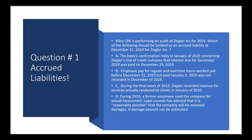Letter C: during the final week of 2019, Ziegler recorded revenue for services actually rendered to the client in January of 2020. That should not have been booked as revenue in December — but that's not an accrued liability. So be careful what the question is asking for. Letter C requires an adjustment to remove that revenue, since it shouldn't have been booked yet. But the question asks which should be booked as an accrued liability, and letter C has nothing to do with an accrued liability. Letter C is premature revenue recognition. So C is out.